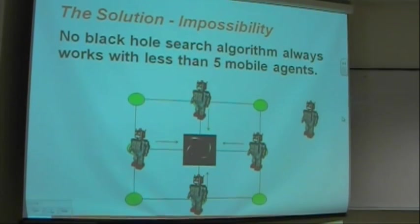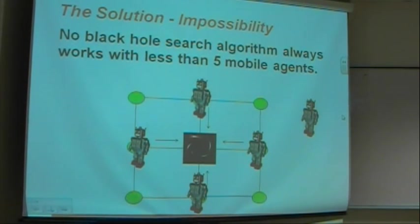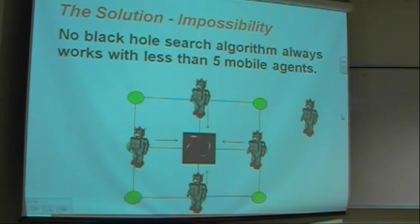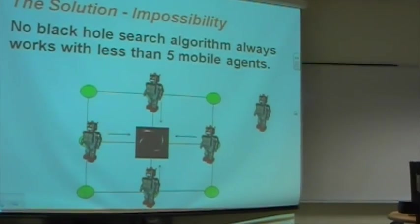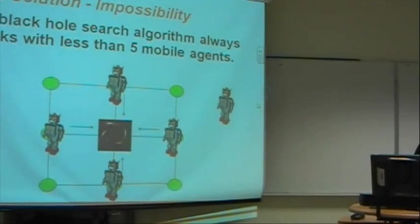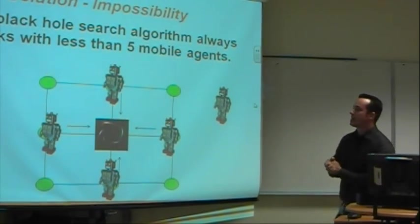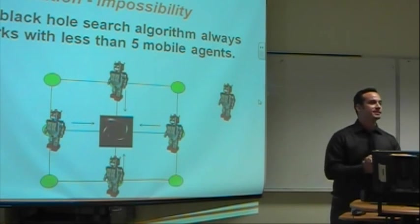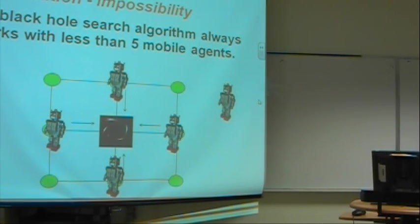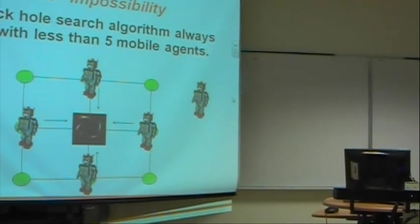So the first result that we got for this is an impossibility result. We found that it's not possible in this context to solve the problem with less than five robots or five mobile agents. So the proof for this, everyone can understand very clearly. You have four robots surrounding the black hole and they take a step and fall into the black hole. You certainly need to have a fifth robot to find out what happened. That's pretty straightforward.